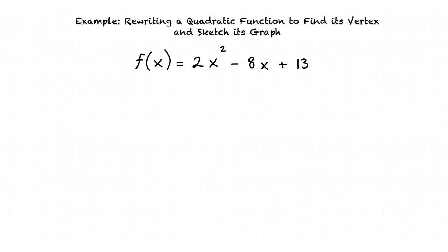We are asked to write our quadratic function in the following form: f(x) = a(x - h)² + k. In this form, our vertex will be found at the point (h, k).